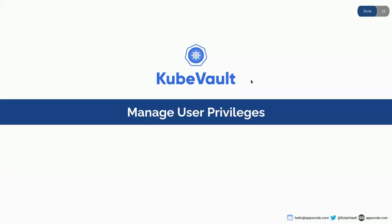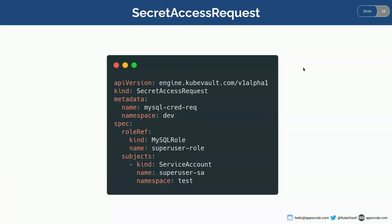We have our secret engine enabled and we have some roles that a DB admin can create. Now you can do role assignment or on-request access to some DB users. One way to manage user privileges is by a secret access request, which is more of a human-friendly way. A secret access request is basically a Kubernetes CRD that allows a DB user to request Vault server credentials in a Kubernetes-native way. When a user requires access to a DB, they can make a secret access request.